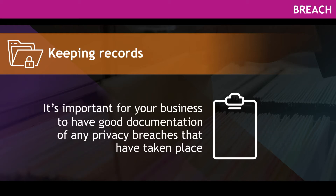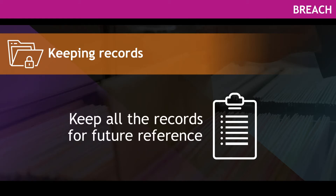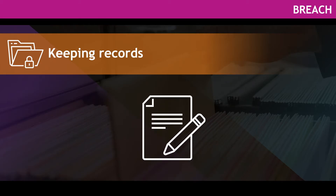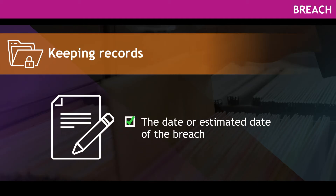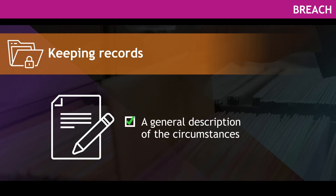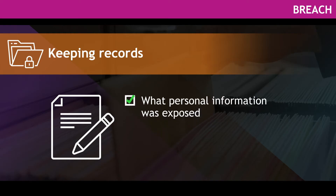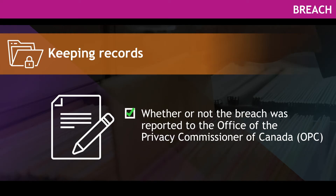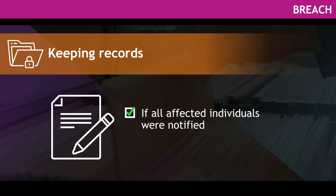It is important for your business to have good documentation of any privacy breaches that have taken place and to keep all the records for future reference. When you make a record of a security breach, you must include the date or estimated date of the breach, a general description of the circumstances, what personal information was exposed, whether or not the breach was reported to the Office of the Privacy Commissioner of Canada (the OPC), and if all affected individuals were notified.